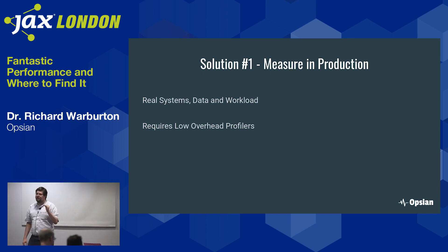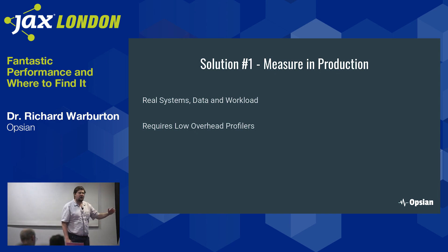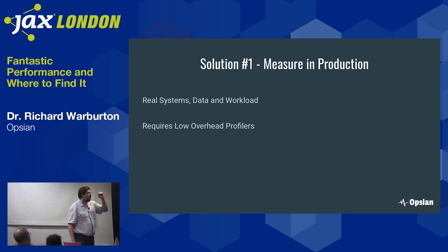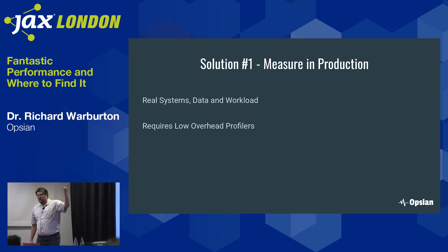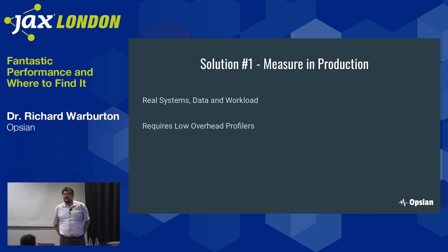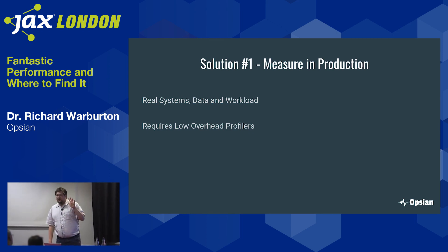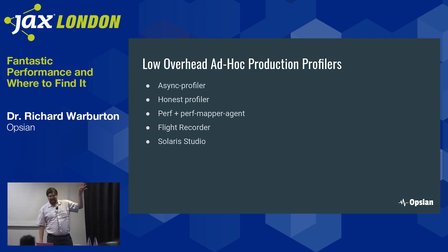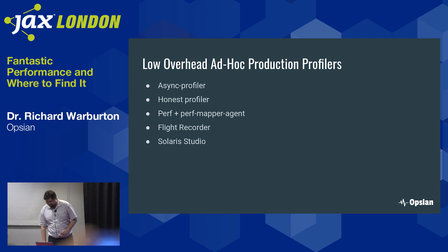You could have the same hardware, the same software, and a perfect workload — and put a lot of money and time into getting those things right. For some organizations that might be a good choice. But a better solution is to just measure what your actual production system is doing, with your real data and a real workload. To achieve that, you need very low overhead profilers — there are a few, some open source, including Opseon's continuous profiler and some ad hoc production profilers.